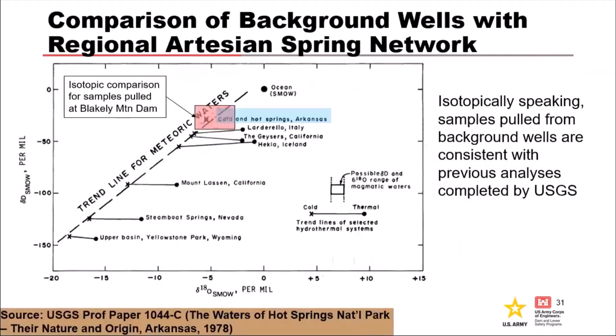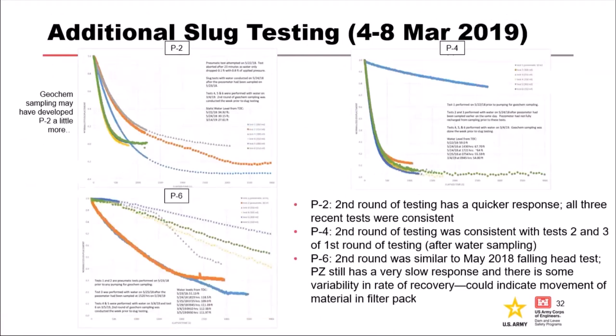Another interesting find: I found a 1978 USGS paper entitled 'The Water of Hot Springs National Park — Their Origin, Nature, and Origin,' which was really helpful in understanding what hot and cold spring activity could be expected at Blakely Mountain. Isotopically, the samples from our background wells were very consistent. I overlaid our isotope map results with the paper's data for the area we were working, and it was consistent with previous USGS analyses, giving us some confidence.